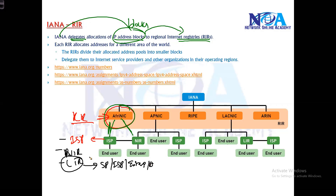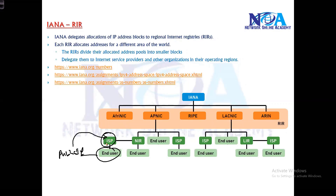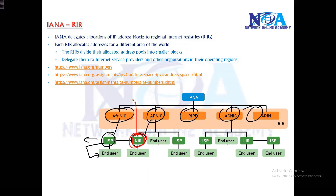Local Internet Registries refer to specific service providers, ISPs, enterprise companies, or academic institutions. From there it reaches the end user. If an end user requires a public IP, they contact their local service provider or local National Internet Registry. If it's a large company, they can also reach the specific RIR directly.